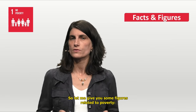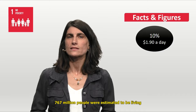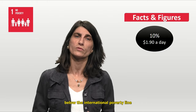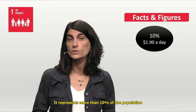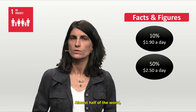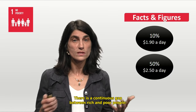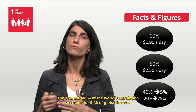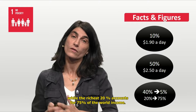In 2013, according to the World Bank, 767 million people were estimated to be living below the international poverty line of $1.90 per person per day, representing more than 10% of the population — one out of ten people in the world. Almost half the world, over 3 billion people, live on less than $2.50 a day. The poorest 40% of the world's population account for 5% of global income, while the richest 20% account for 75% of world income.